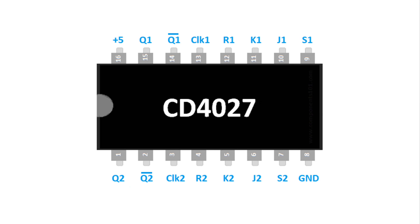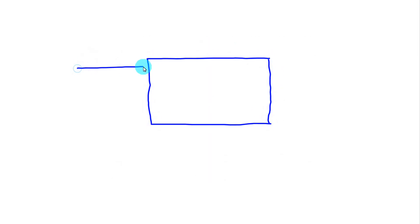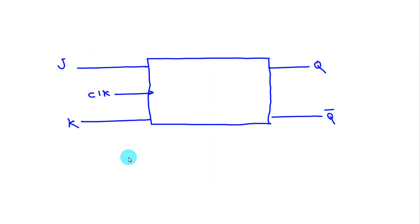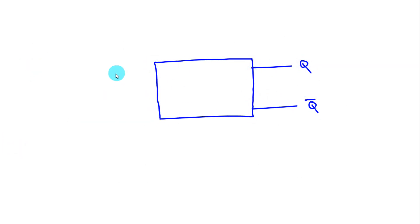In the last video we discussed the JK flip-flop IC 4027. To make it a T flip-flop, we have to connect both pins J and K together — now it will work as a T flip-flop. The T flip-flop has four pins: T (the input), clock (the input), and Q and Q-bar (the outputs).